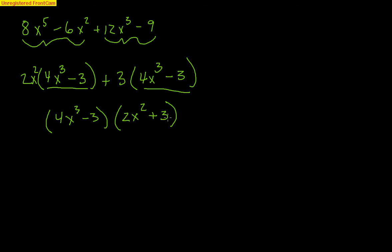Those are the basic factoring techniques. Be aware that you can always use multiple techniques together — for example, remove a common factor first, then factor a difference of cubes, a perfect square trinomial, a trinomial, or use grouping. Sometimes you need to combine multiple techniques. We went through all the very basic factoring techniques, and hopefully that serves as a quick review of factoring for you.